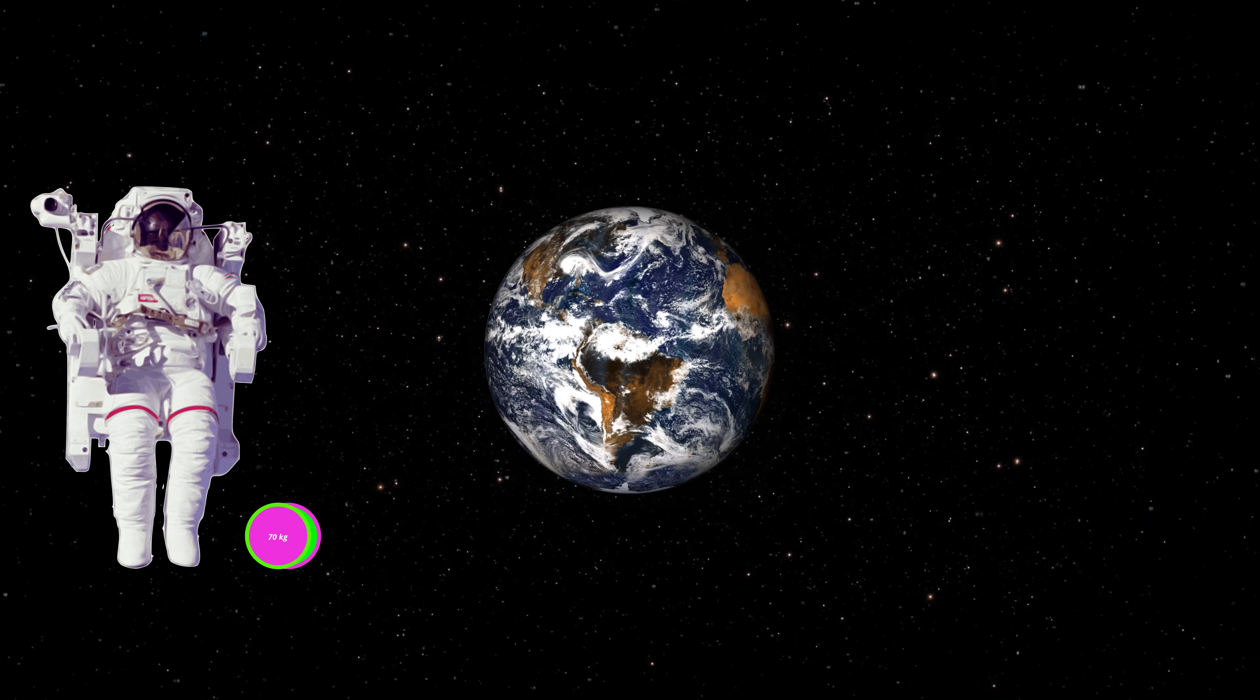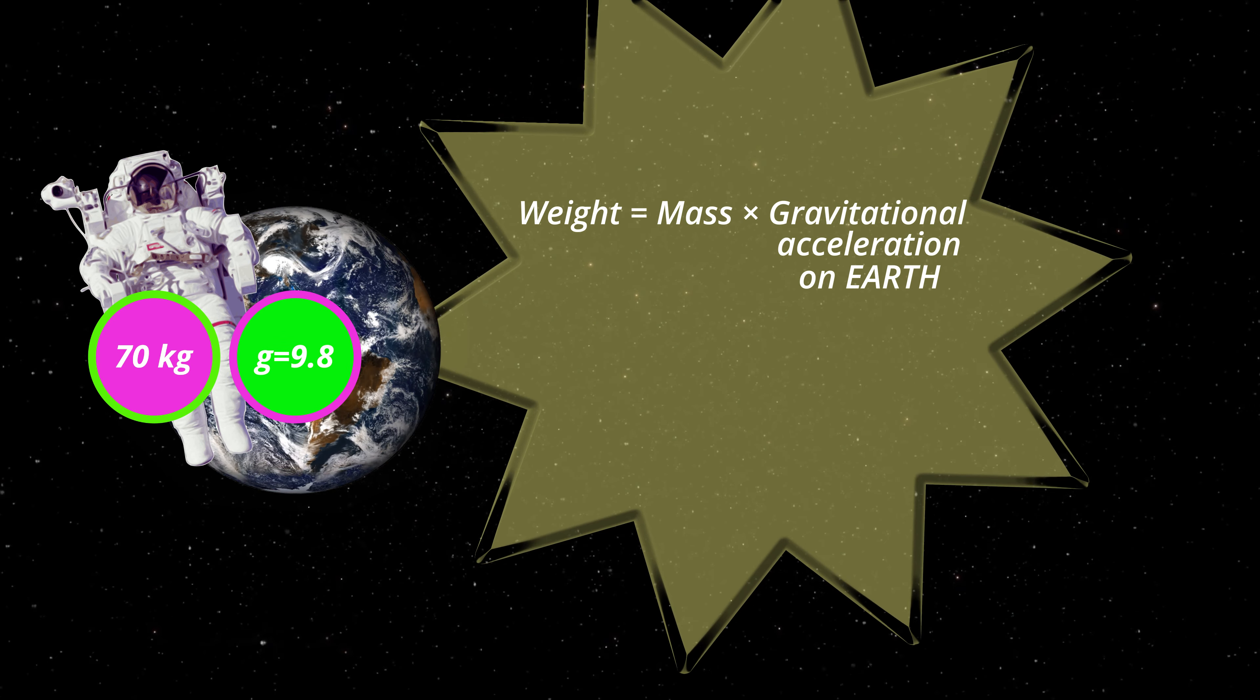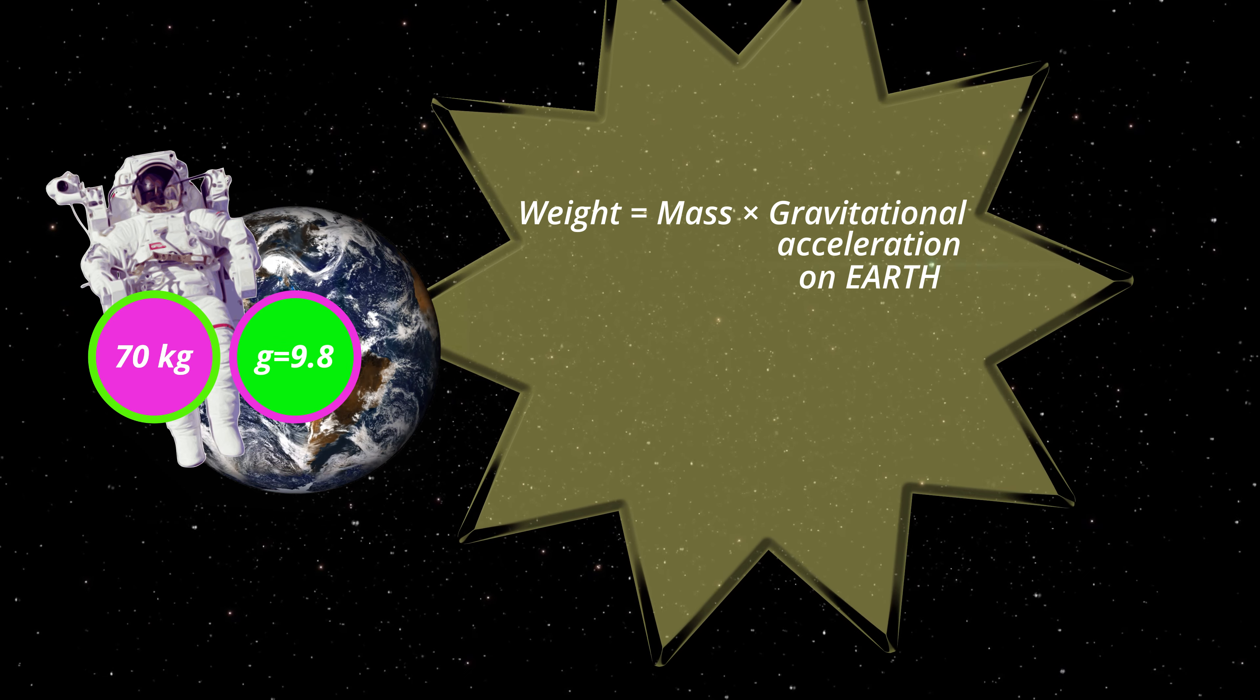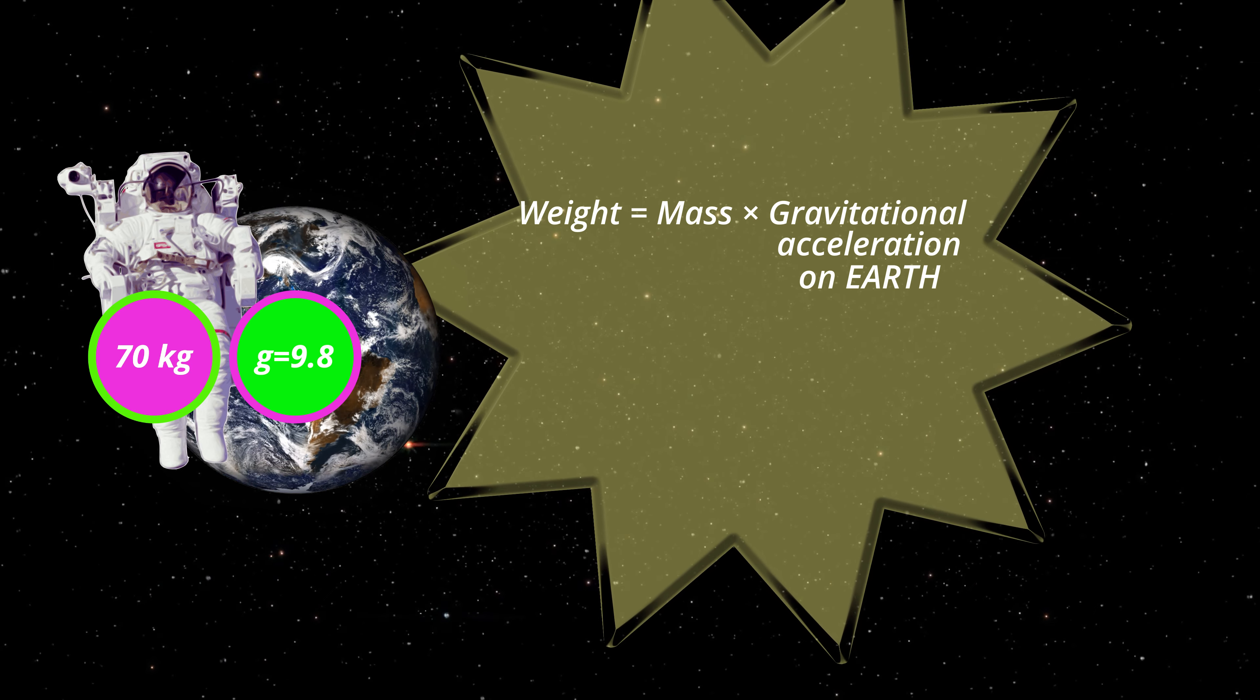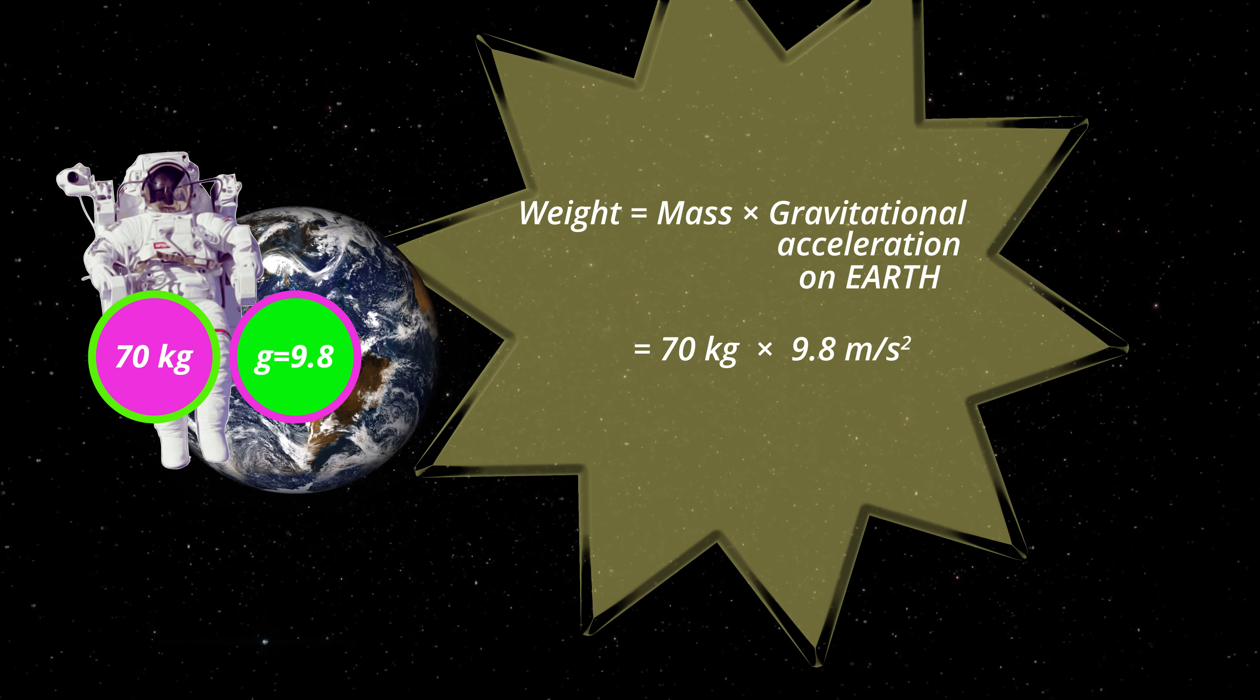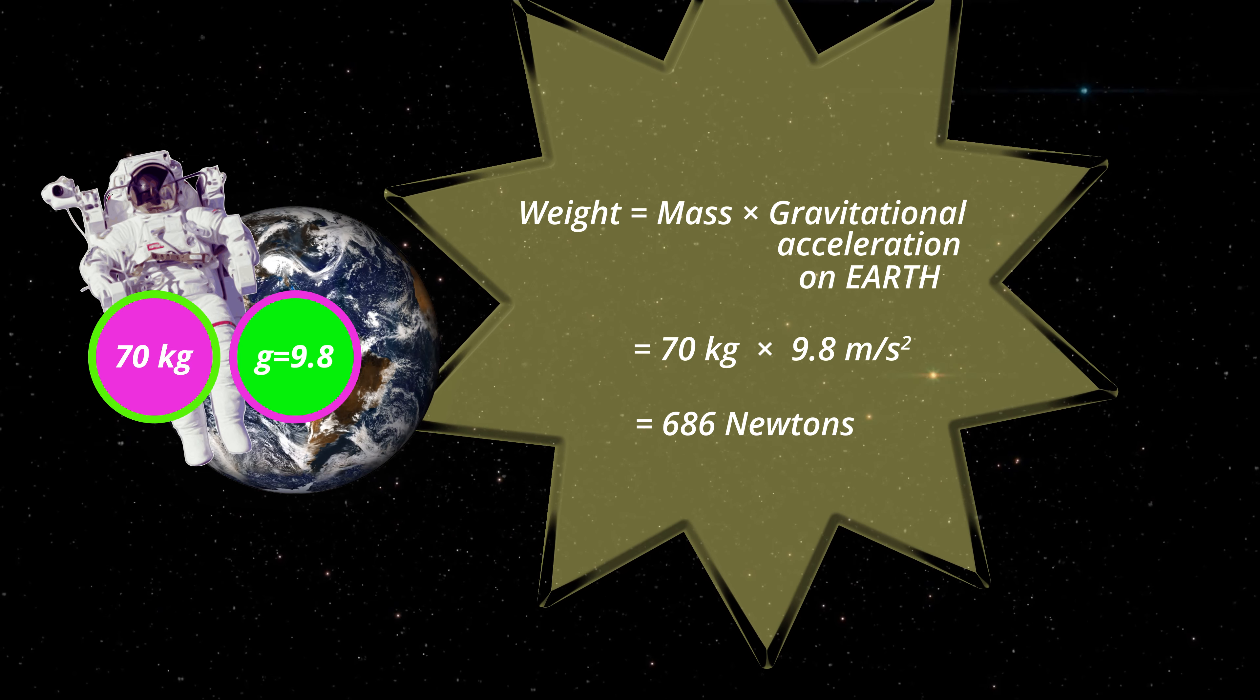Now let's work out her weight on Earth. We'll use the rule. The weight on Earth equals the mass in kilograms multiplied by Earth's gravitational acceleration of 9.8 metres per second squared. That's her mass of 70 kilograms multiplied by 9.8, which is 686 newtons.